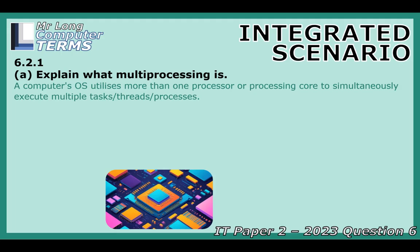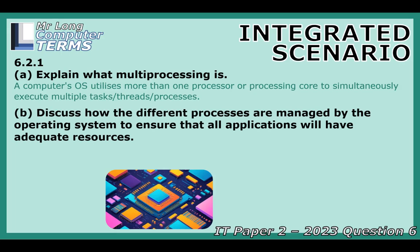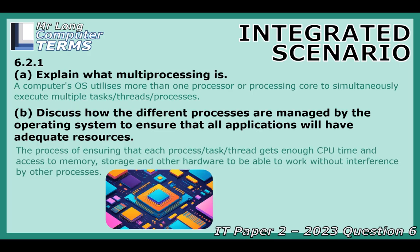How does the operating system juggle all that and make sure the 3D tour runs smoothly without crashing? The OS acts like a traffic cop. It makes sure each process — each part of that 3D tour software — gets its fair share of CPU time, memory, and access to the hard drive. It tries to prevent one demanding task from starving the others, aiming for that smooth, responsive feel when you're clicking around the virtual school.